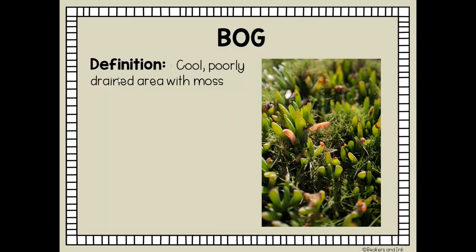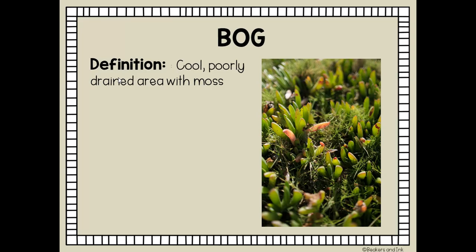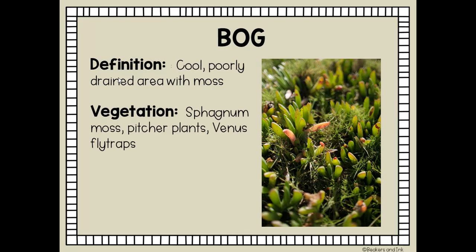We're going to start with a bog. A bog is defined as a cool, poorly drained area with moss. The only source of fresh water in a bog is rain. Since no streams carrying nutrients flow into bogs, plants such as the Venus flytrap get their nutrients from insects. Vegetation in a bog includes sphagnum moss, pitcher plants, and Venus flytraps. Bogs are usually found in cool, northern climates.